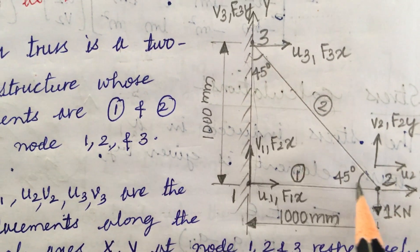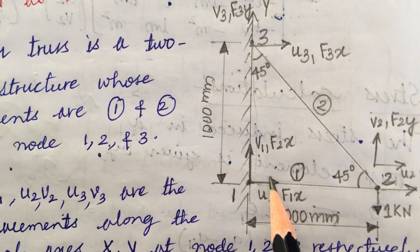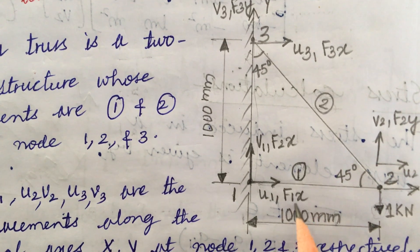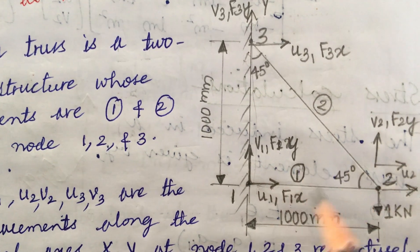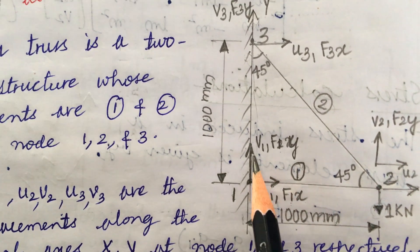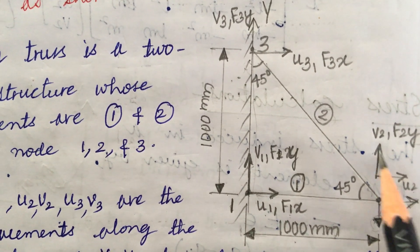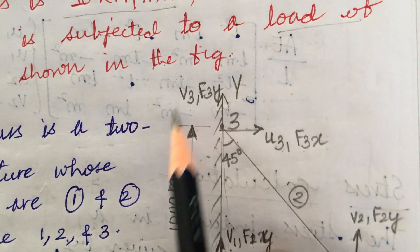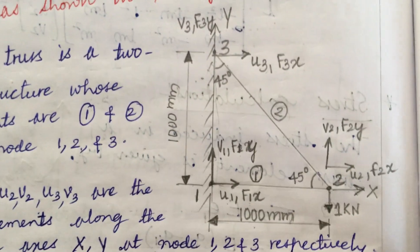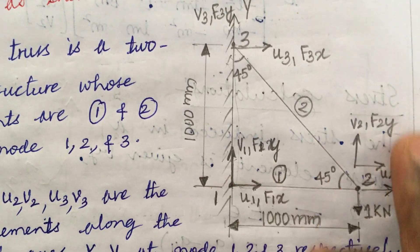Trusses have axial forces along x and y — that is f1x, f1y and f2x, f2y — with displacements u1 and v1. Similarly, f2x and f2y are the forces and u2 and v2 are the displacements at node 2. At node 3, u3 and v3 are the displacements and f3x and f3y are the forces. This is the diagrammatic representation you need to plot in your booklet.